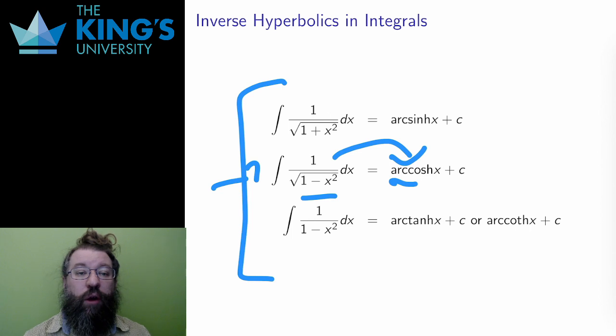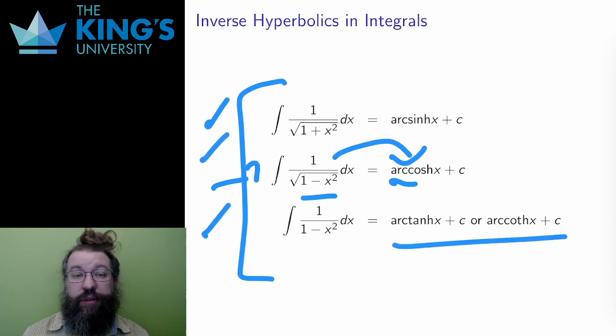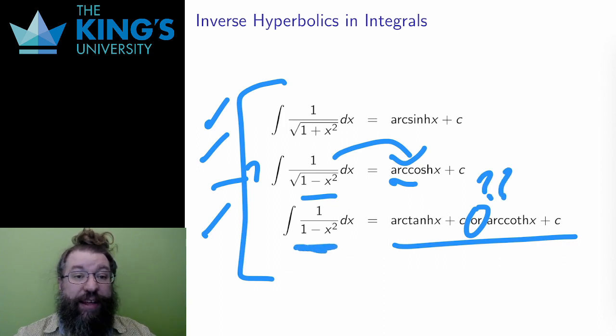So here are three such integrals. The last is an interesting case. Inverse hyperbolic tangent and inverse hyperbolic cotangent actually have exactly the same derivative, 1 over 1 minus x squared. So the integral of 1 over 1 minus x squared must be either of these functions. And that seems odd. How do I know which one to choose?